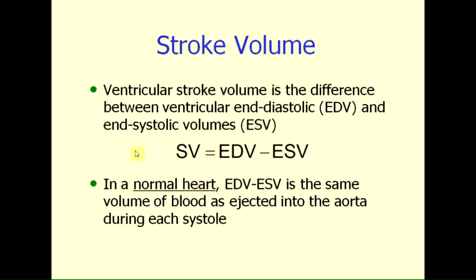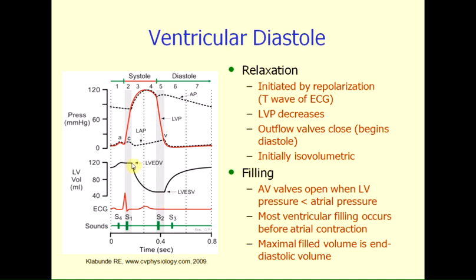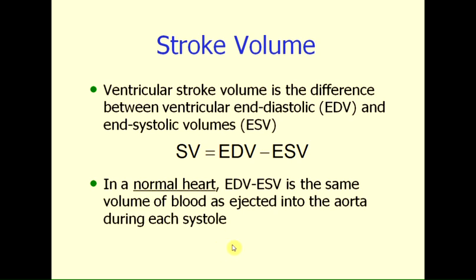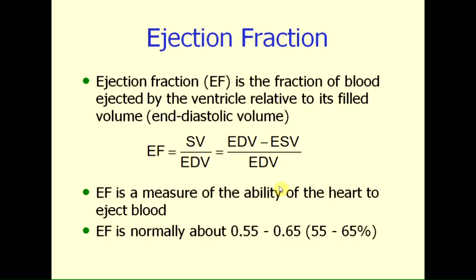An important definition is stroke volume. Stroke volume is defined as the difference between ventricular end-diastolic volume and end-systolic volume, so stroke volume equals EDV minus ESV. That is the difference between the filled volume of the ventricle prior to contraction and ejection, minus what remains in the ventricle at the end of ejection. In a normal heart, it's important to note that this stroke volume is the same volume of blood ejected into the aorta during systole.